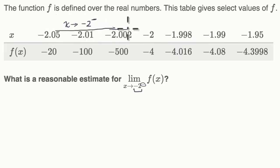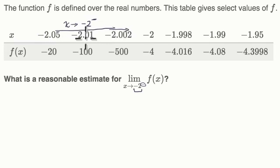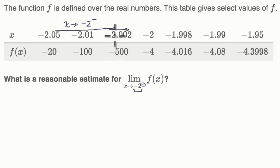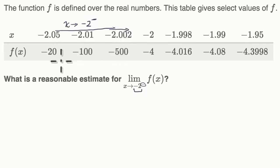These are the values approaching negative 2 from the left: negative 2.05, then even closer at negative 2.01, then even closer at negative 2.002. These are from the left because they are values less than negative 2, getting closer and closer to it. When we're a little bit further, f of x is negative 20. A little closer, it's negative 100. Even a little closer, it goes to negative 500. So it looks like, as we get closer and closer to negative 2, this is getting unbounded — becoming infinitely negative.